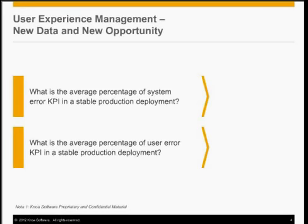The best way to illustrate this is to ask a few questions. When I ask these questions of CIOs or line of business executives, the response is almost always the same. I'll ask about system error and business process performance error. Almost without exception, every CIO will say they really don't know the answer in terms of percentage. They can only see a certain number of system errors, and over time, from their help desk operations, they start to get a sense of user errors.